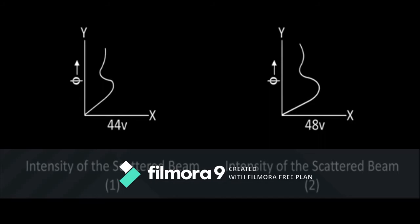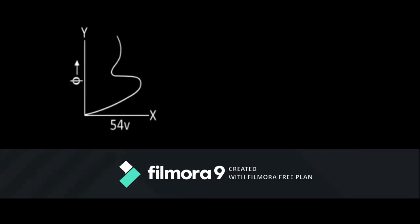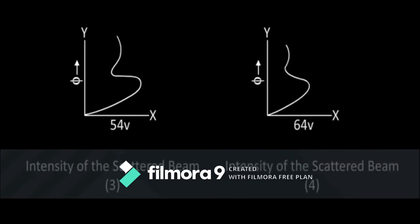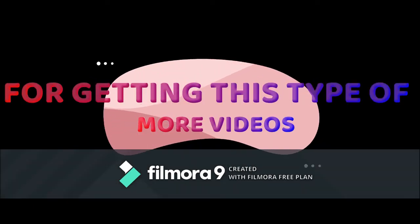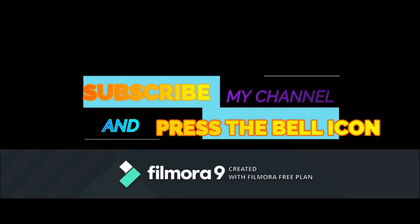Based on the similarity of these curves with the curves obtained by X-rays under similar experimental conditions, and also the similarity in the diffraction rings obtained for the electron beam with X-rays, Davison and Germer in 1927 concluded that, like X-rays, electrons also have wave character.